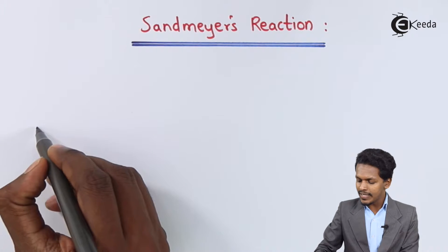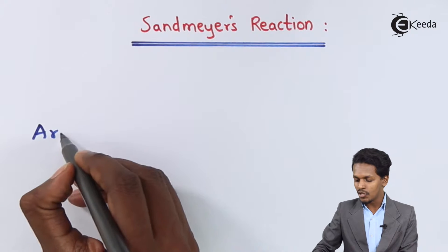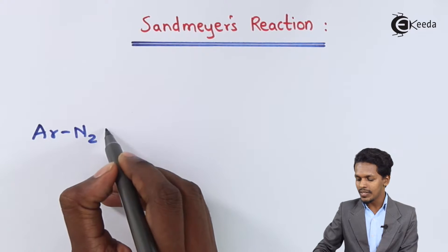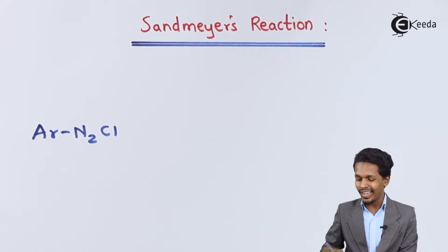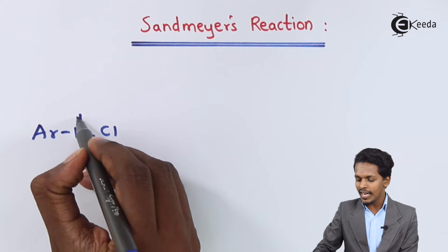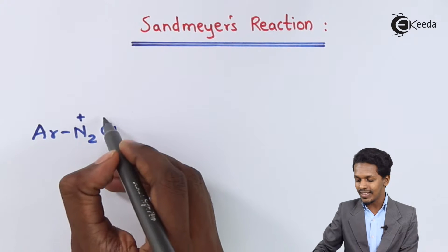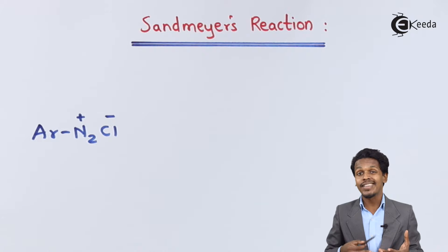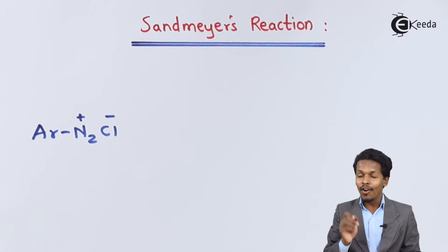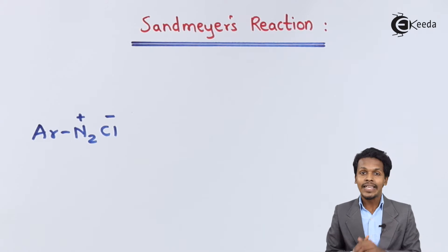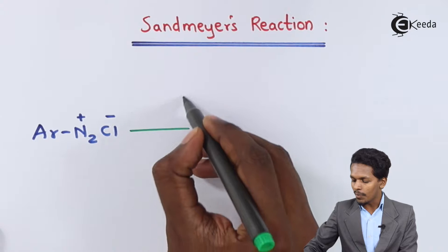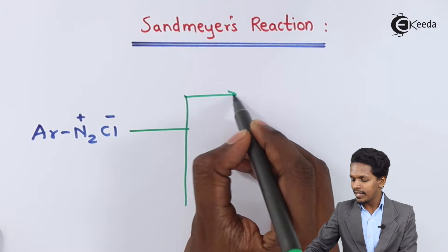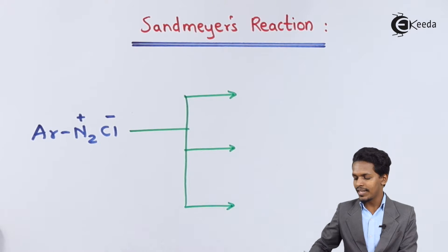Let me discuss the aryl diazonium salts, which can be represented as ArN₂Cl. If we are talking about an aryl diazonium chloride, the nitrogen acquires a positive charge while the Cl acquires a negative charge. Suppose if we have to prepare different compounds — for example aromatic chloride, aromatic bromide, or aromatic cyanide — we have to use HCl, HBr, as well as cuprous compounds. I am dividing this into three types or three reactions.